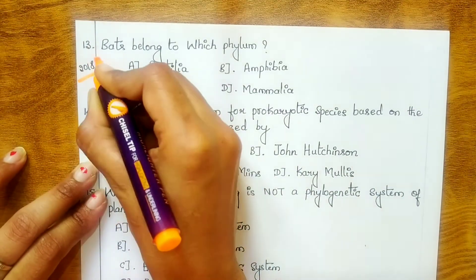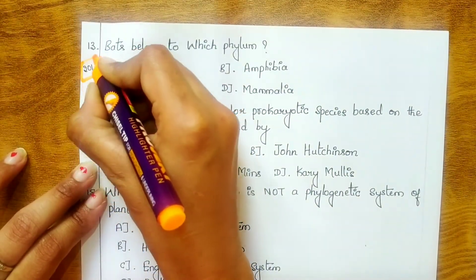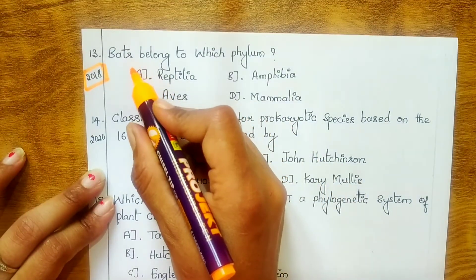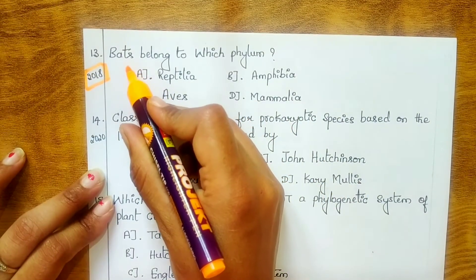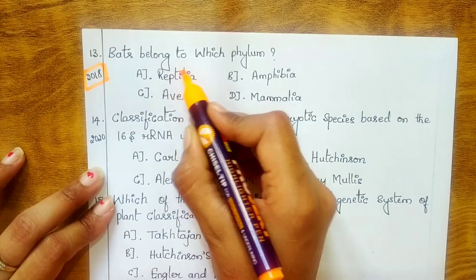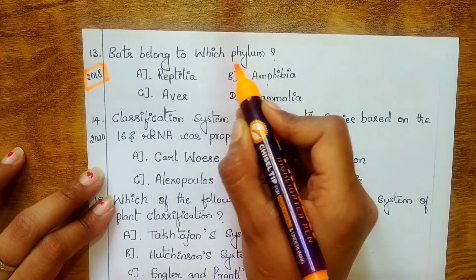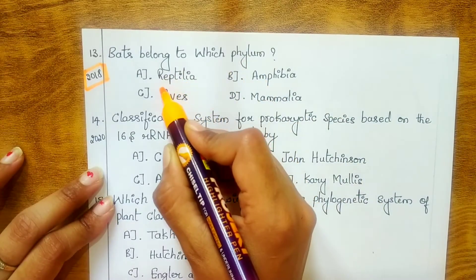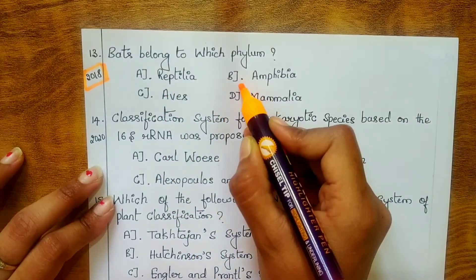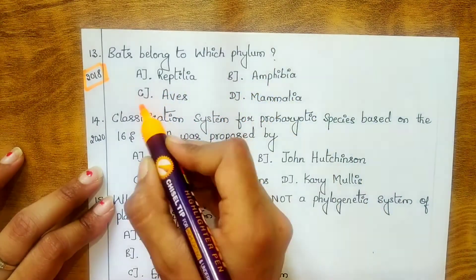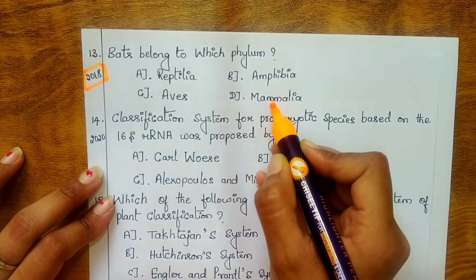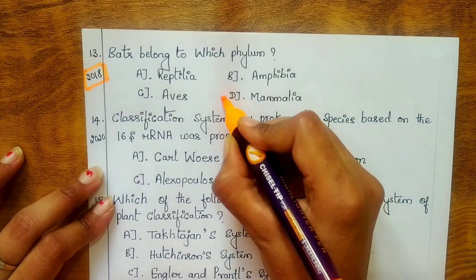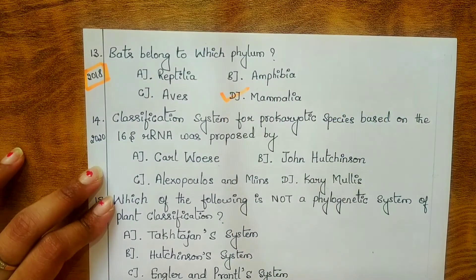Thirteenth question, from the 2018 KSLET Life Science paper: bats belong to which class? Options are: A. Reptilia, B. Amphibia, C. Aves, D. Mammalia. The answer is D — Mammalia.